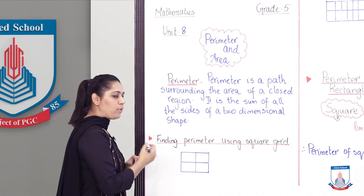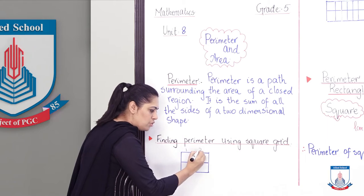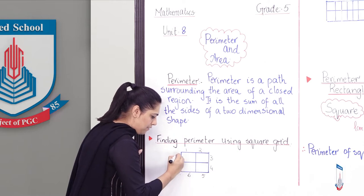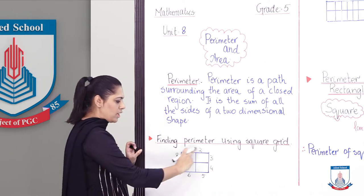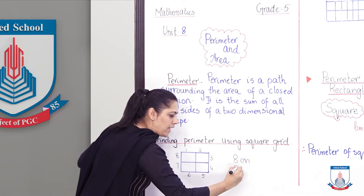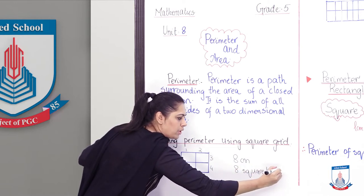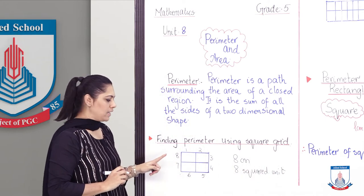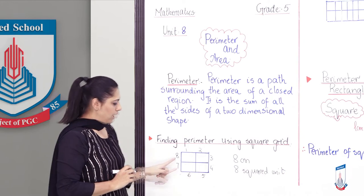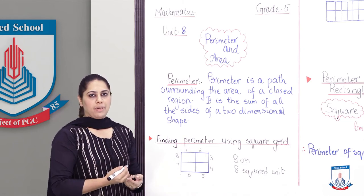If I am going to start counting from here, 1, 2, 3, 4, 5, 6, 7, 8. So this square's perimeter is 8 centimeters or 8 squared units, because I made it on square paper. That's why it's squared unit. It didn't have proper measurement, so I wrote it as 8 squared units.